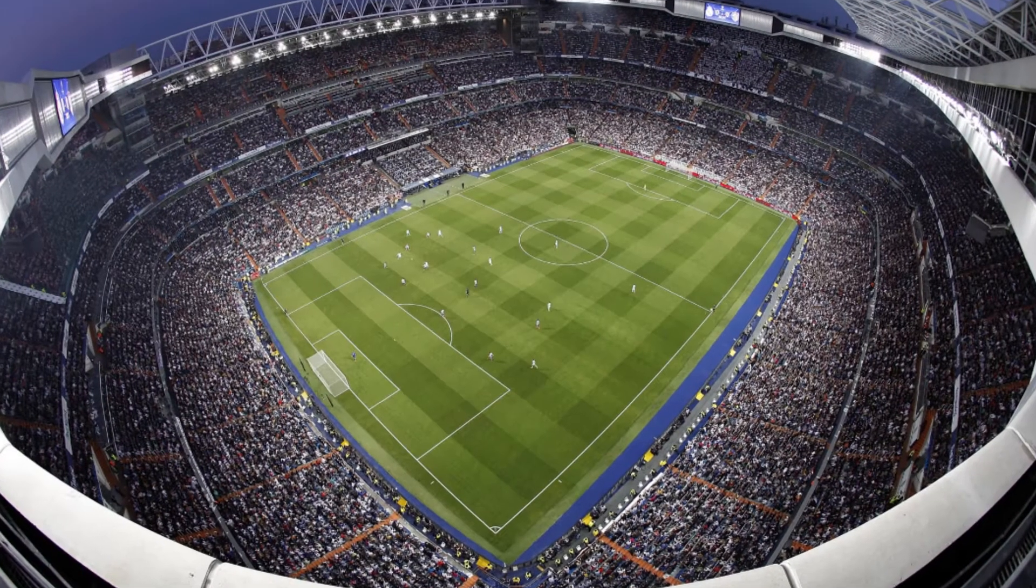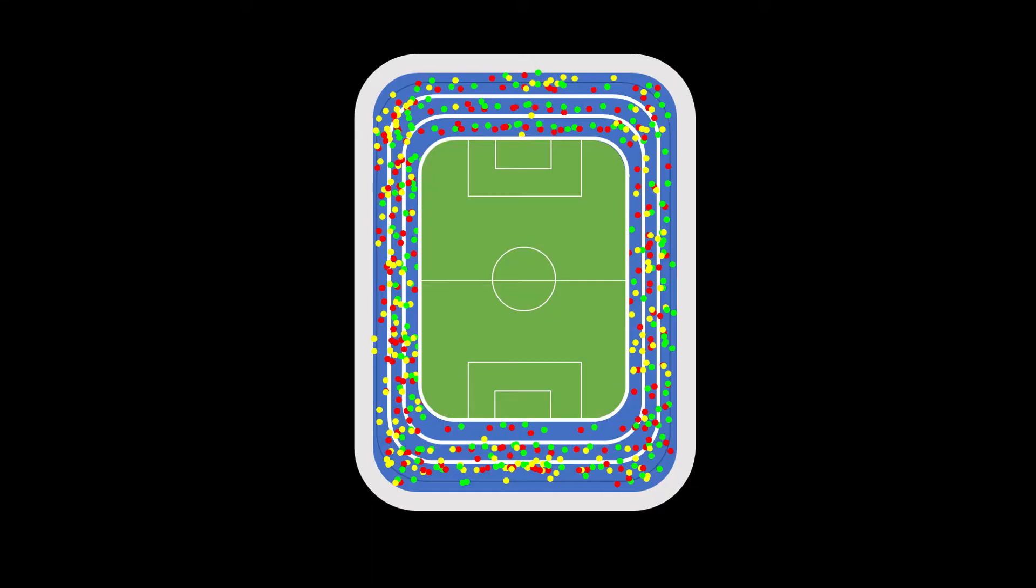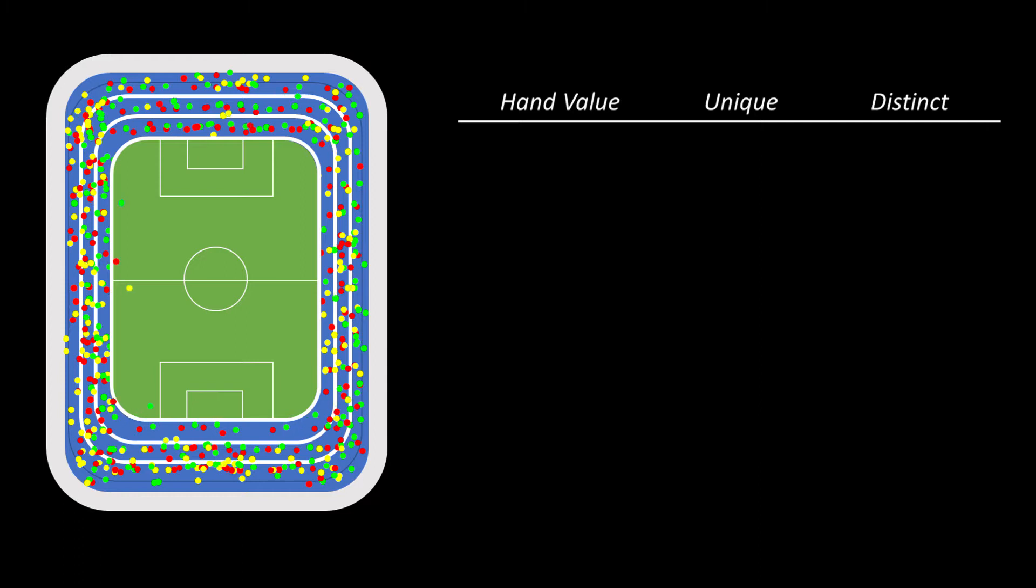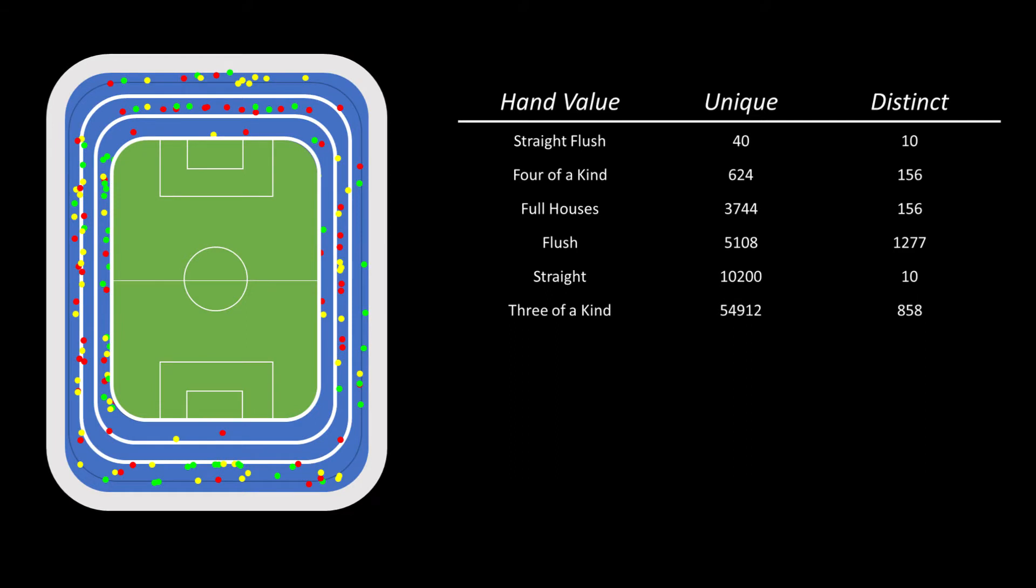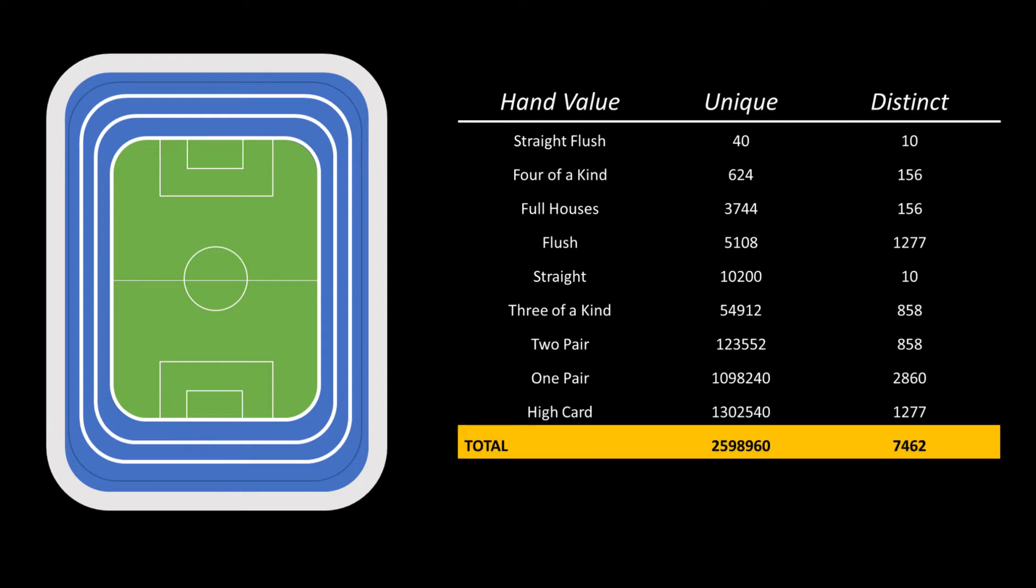If you assign each of the combinations to 2.6 million people, gather them together in a stadium and ask anybody with a straight flush to step forward, you'll find that you have 40 unique combinations but only 10 distinct combinations. This is because a diamond royal flush will have the same ranking as a spade royal flush. If we do this for all the other hand combinations and distinguish between the unique and distinct groups, 4 of a kind drops from 624 to 156, straights get whittled down from over 10,000 to just 10 and so on. When it's all done, the stadium is empty and we end up with a very manageable 7462 distinct hand combinations.